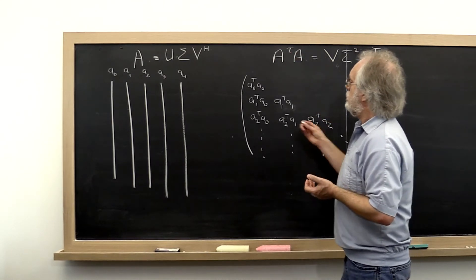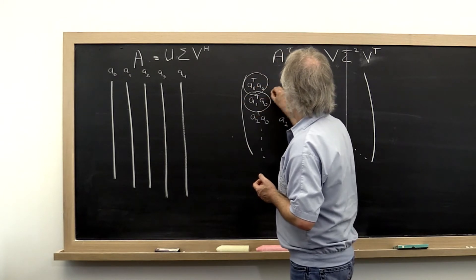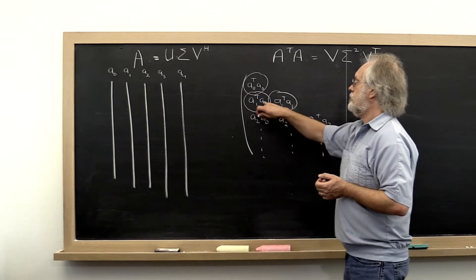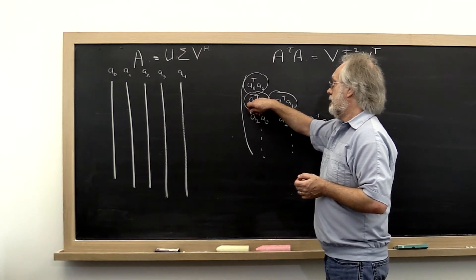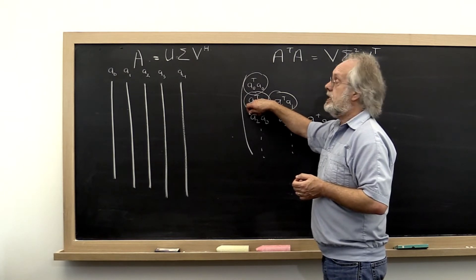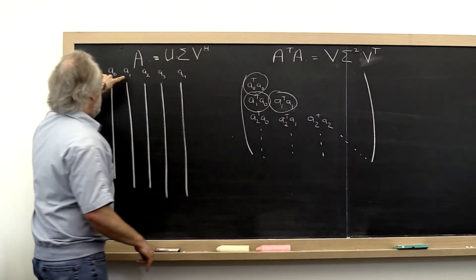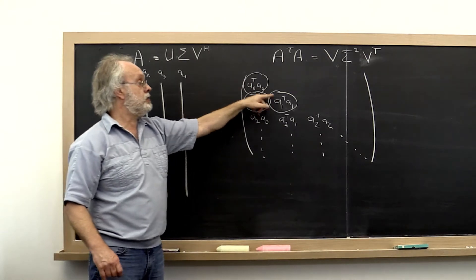what we can do instead is form only these entries right here and then compute a Jacobi rotation that introduces a zero right here.